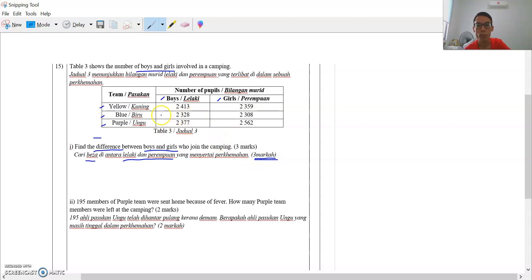Step 1, you have to find out all the boys, how many boys are there. Step 2, find out how many girls are there. And then step 3, find the difference, cari beza. So let's find out all the boys. We add up all the boys first: 2,413 plus 2,328 plus 2,337.